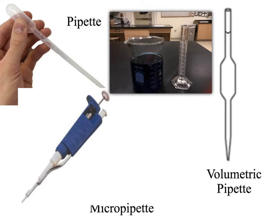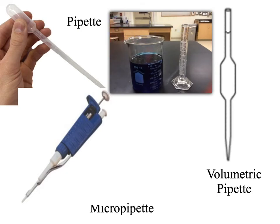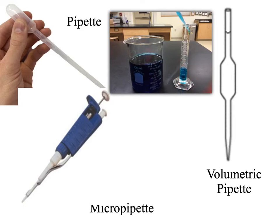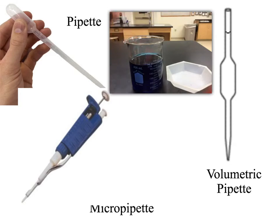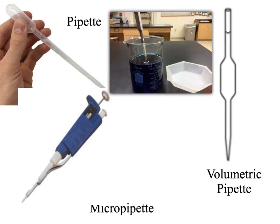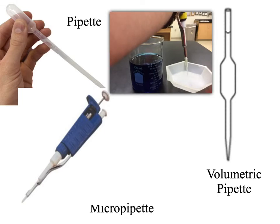Now let's talk about pipettes. These have the same function as an eyedropper — transferring liquid — but for some of them there's a little more to it. We're going to cover pipettes, micro pipettes, and volumetric pipettes. A plain pipette has the exact same function as an eyedropper: simply transferring liquids, in this case from a beaker to a graduated cylinder. The micro pipette — the word micro means small — so we're moving liquid from one container to another but in a very small amount.